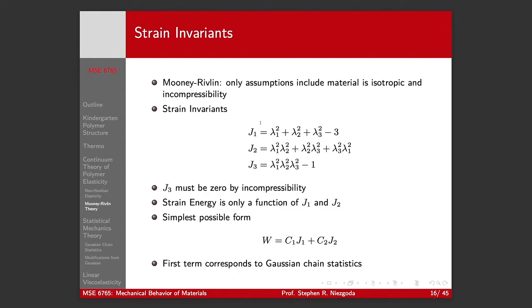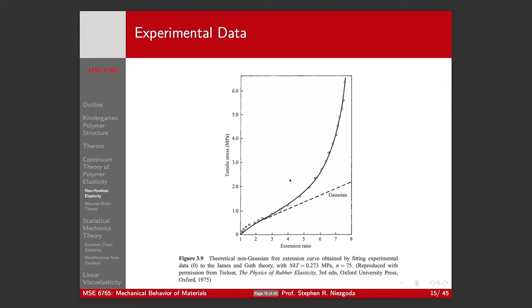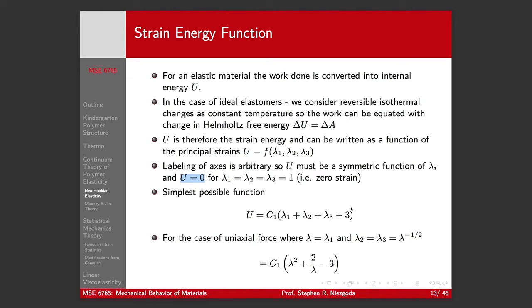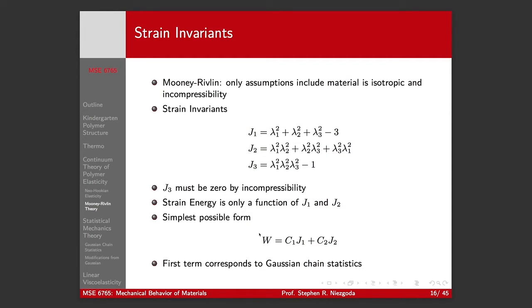So, we can, sticking with the constitutive theory, if we want to capture some of these nonlinear characteristics, we can introduce a more complex strain energy term. For the Neo-Hookian theory, we pick the simplest one we can. For Mooney-Rivlin theory, which is a very popular model, we're going to make a slightly more different form. And the Mooney-Rivlin model, the only major assumption is that our material is isotropic and that we have incompressibility.